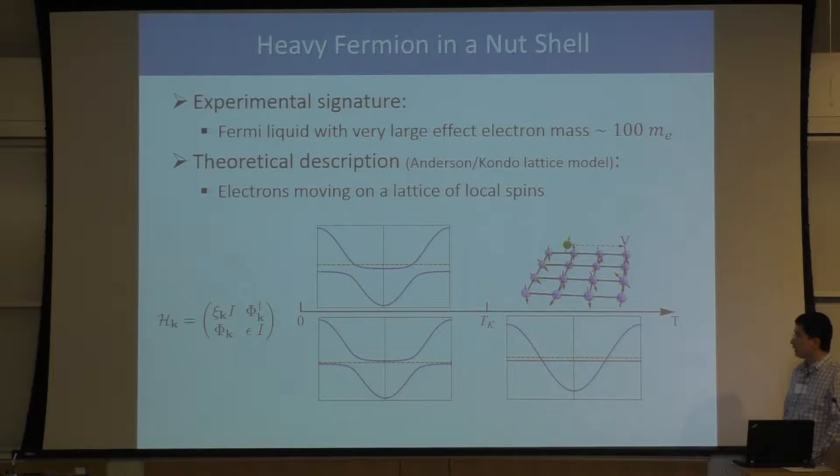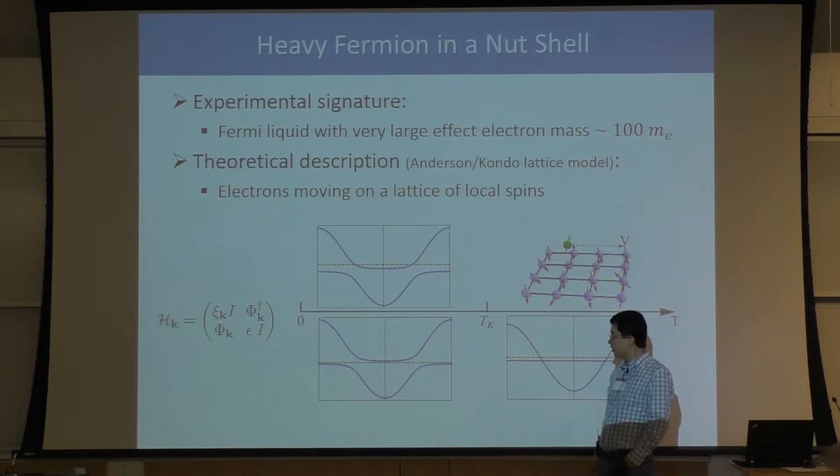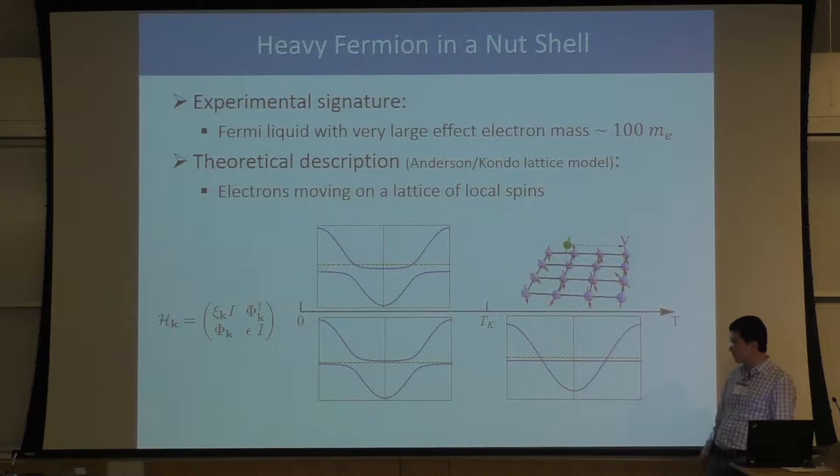The conducting electron and the localized electron couple together through the so-called Kondo coupling — basically the spin of the conducting electron dotted with the spin of the localized electron. At high temperature, Kondo coupling is extremely small, going to zero, so we can think of these two bands as decoupled. But as we go to lower and lower temperature, this Kondo coupling increases, introducing hybridization between the two bands.